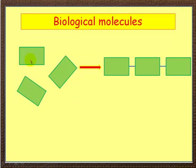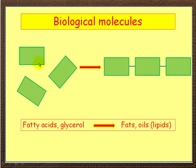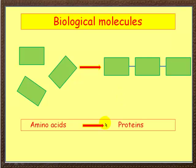Let's think now about the building blocks and the finished products. First of all, carbohydrates consist of simple sugars. When simple sugars combine, they form starch and glycogen. So starch and glycogen are chains of simple sugars. Fatty acids and glycerol are the building blocks of fats and oils — they combine together to form fats and oils. And as we just mentioned, proteins are made up of amino acids.